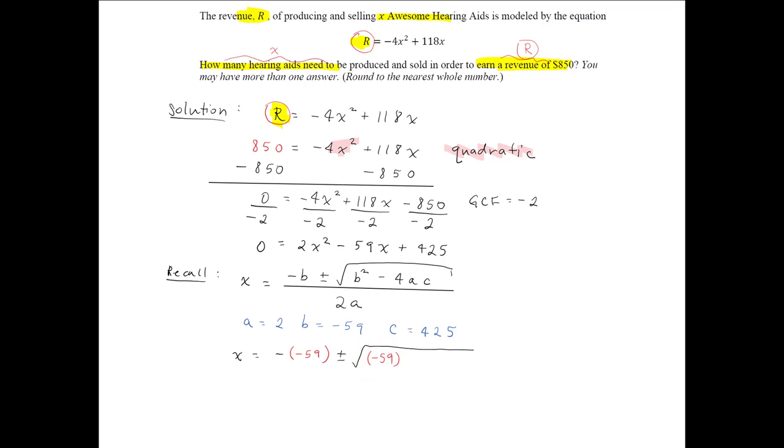minus 4 times a, which is 2, times c, which is 425, divided by 2a, and once again a is positive 2.